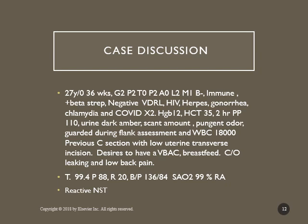Two-hour postprandial glucose is 110, which is below the desired maximum of 120. Her urine is dark amber, scant amount, with a pungent odor. She's guarding during flank assessment and her WBCs are 18,000 — elevated above the 15,000 range, indicating a definite infection, even accounting for the normally elevated neutrophils of pregnancy between 5,000 and 15,000. She appears to have pyelonephritis due to the flank pain. She had a previous C-section with low uterine transverse incision and desires a VBAC. She desires to breastfeed and complains of leaking and low back pain — the pyelonephritis has taken her into preterm labor symptoms.